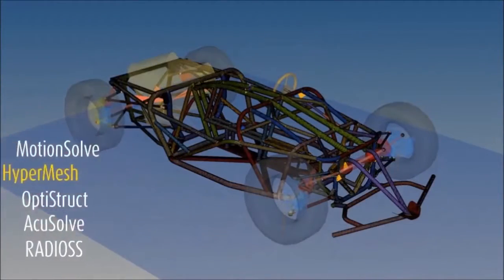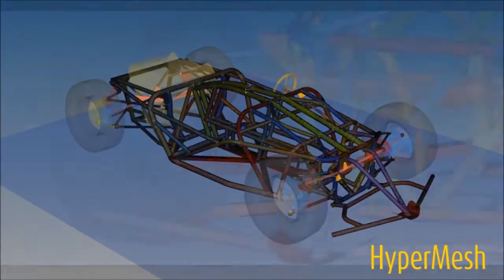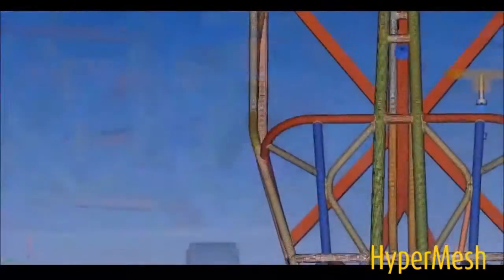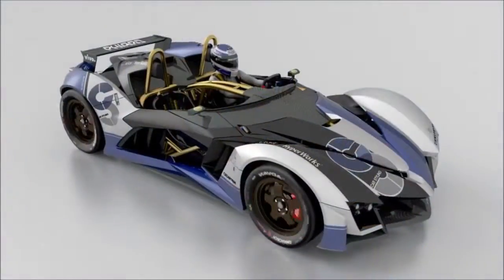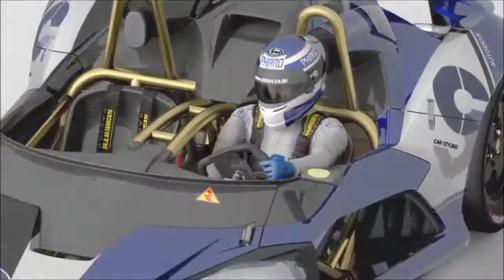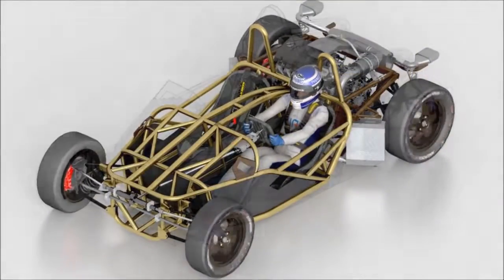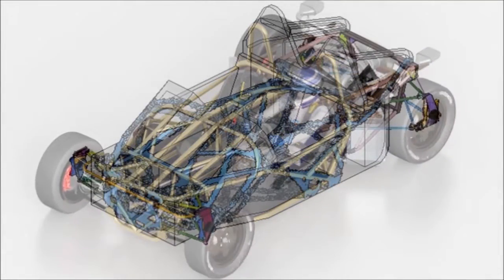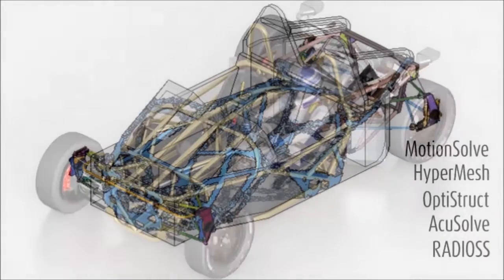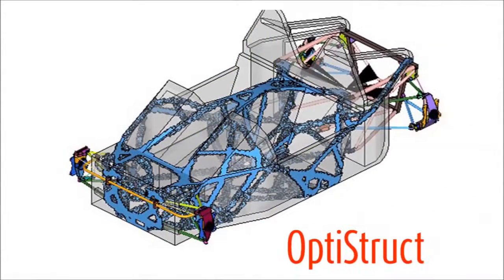HyperMesh has been used to generate a detailed finite element model of the frame. To identify load paths and optimize the structural performance of the frame, Fiaro designers have also used OptiStruct's topology optimization and analysis capabilities, generating an extremely lightweight yet rigid structure which performs well under extreme static and dynamic loads.